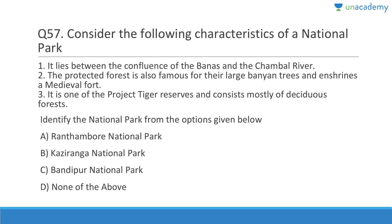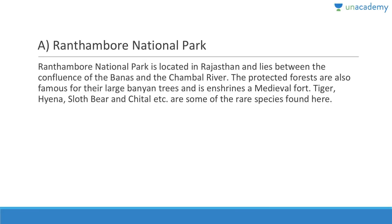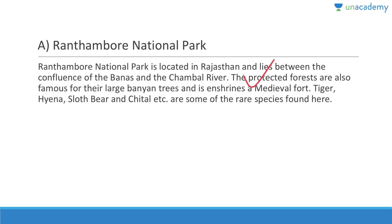Question fifty-seven: Consider the following characteristics of a national park — it lies between the confluence of the Banas and Chambal rivers, the protected forest is famous for large banyan trees, and it enshrines a medieval fort. The answer is Ranthambore National Park, located in Sawai Madhopur district of Rajasthan. It lies between the confluence of the Banas and Chambal rivers, enshrines a medieval fort, and has tigers, hyenas, sloth bears, and chital among its species.